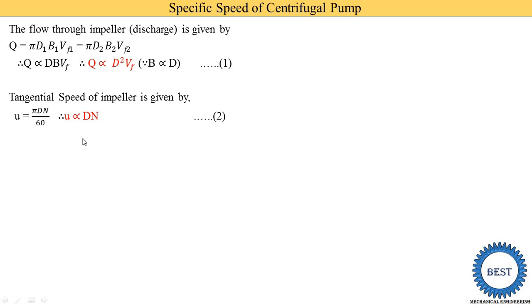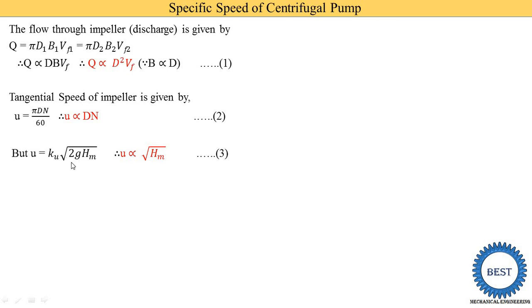The equation for u can also be written in another form: u = Ku√(2gHm). Here Ku is constant, 2 and g are constants, so u ∝ √Hm. This is equation 3.